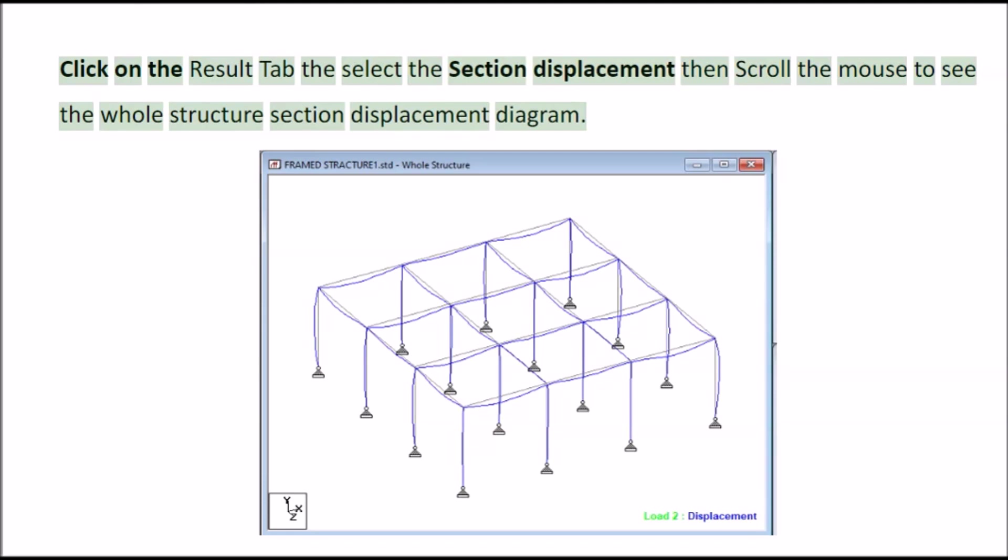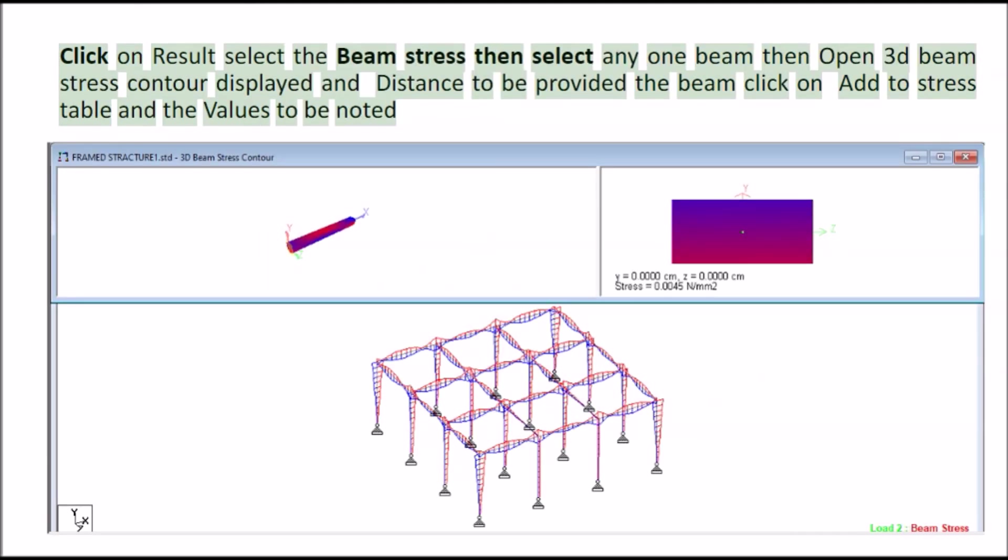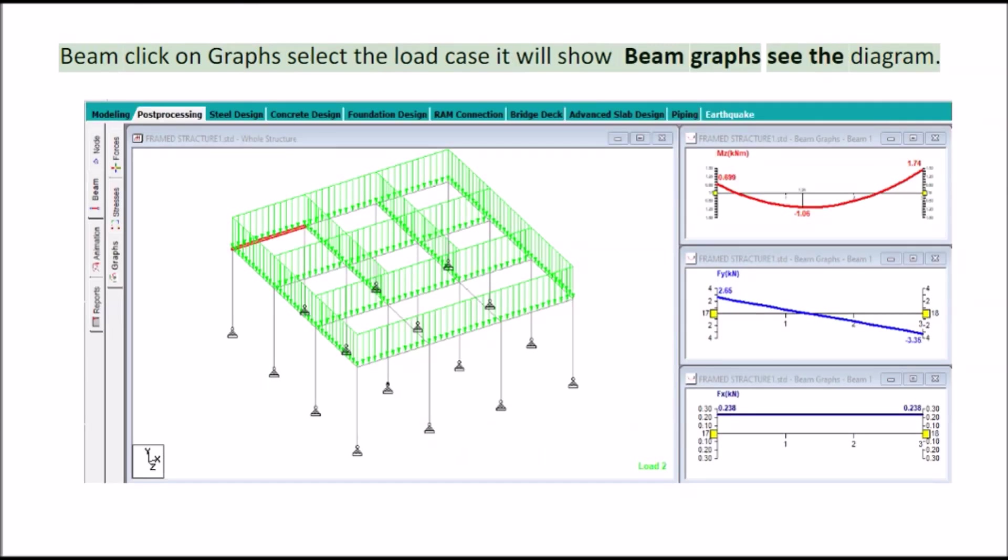Click on result select the beam stress then select any one beam then open 3D beam stress contour displayed and distance to be provided the beam click on add distress table and the values to be noted beam click on graph select the load case it will show beam graph see the diagram.